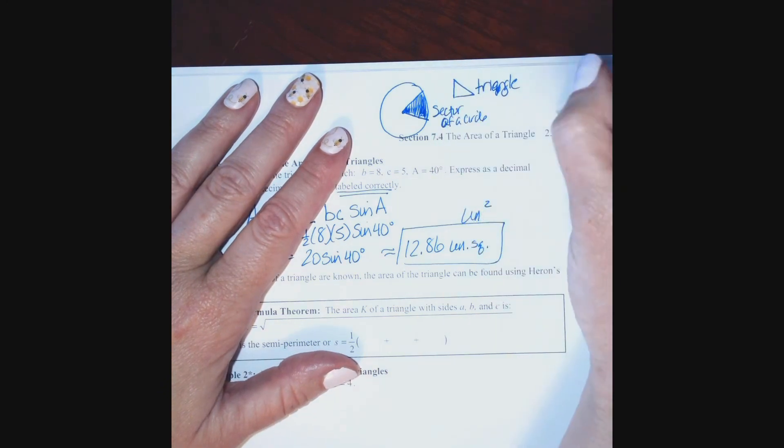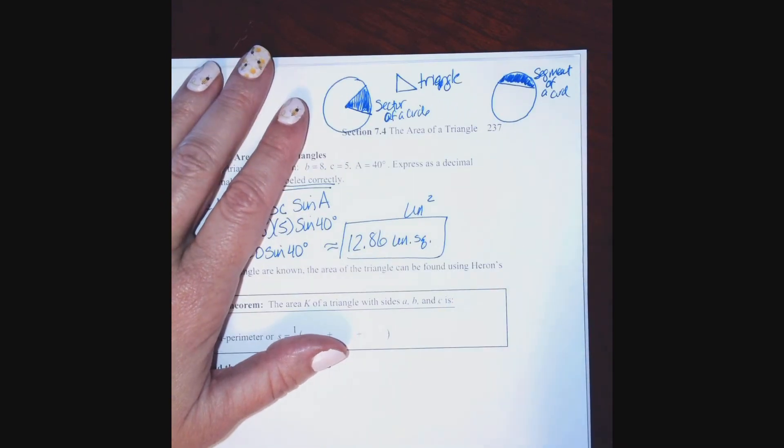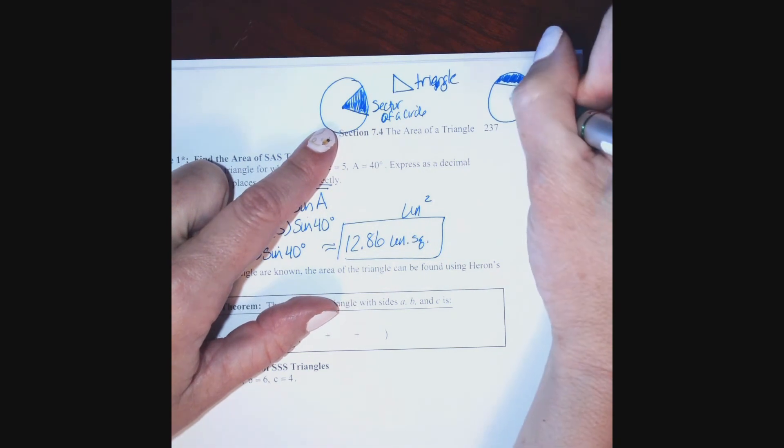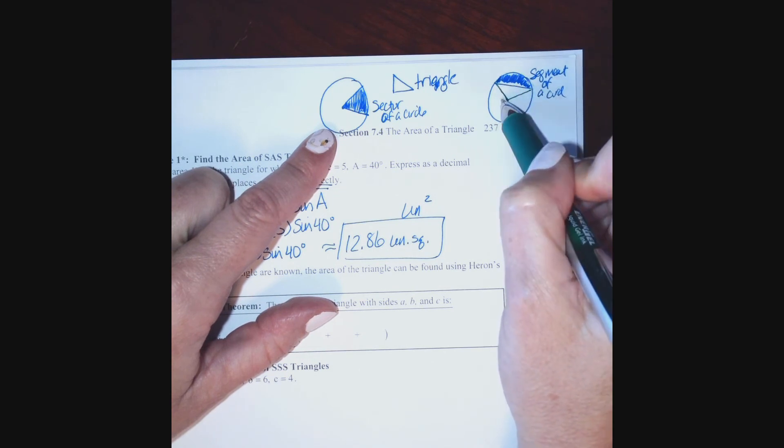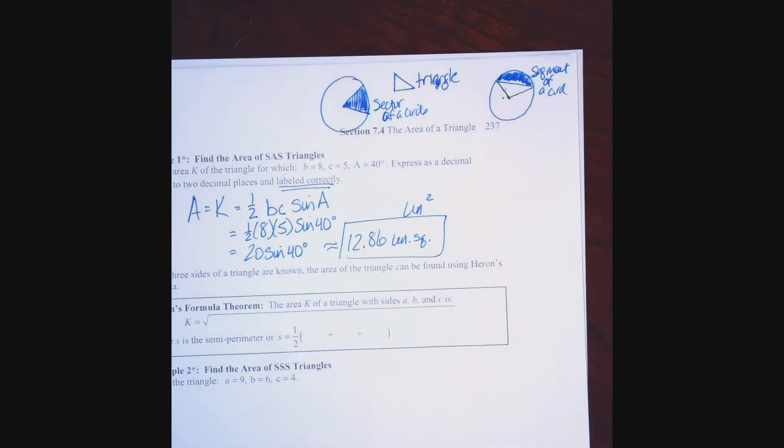And then we have segment of a circle. So, to think segment of a circle, think about a chord that cuts off an arc, subtends an arc. This is a segment of a circle. Now, you can use the concept of area of a triangle with the sector of a circle to find a segment. Because if I went, for example, to the center of my circle and made this a sector, you can see that this sector of my circle includes a triangle and that segment. That gives you kind of a heads up toward some of the application problems you're going to find in the homework.